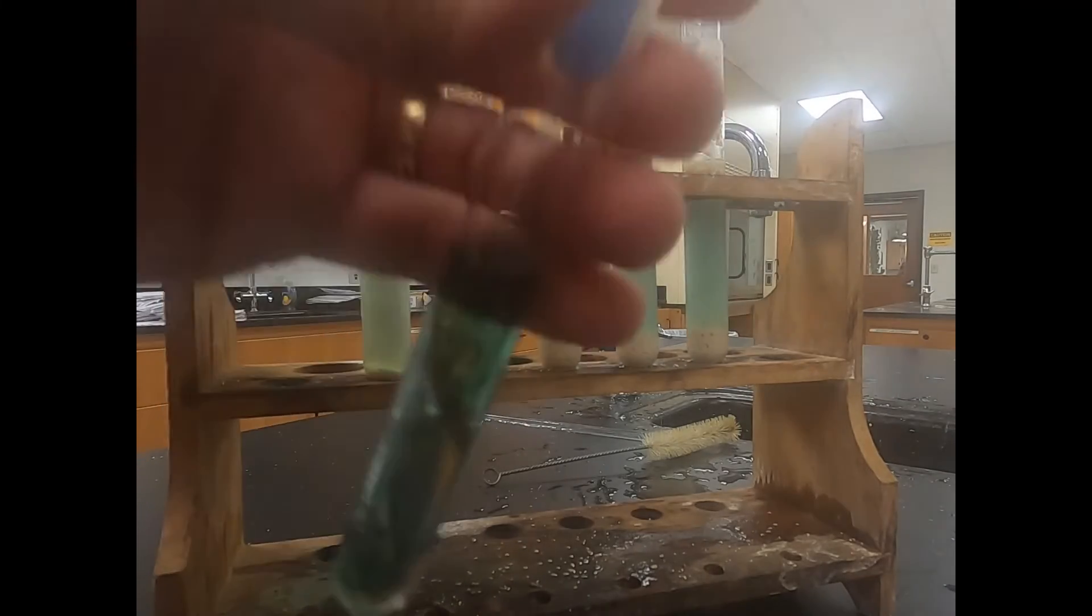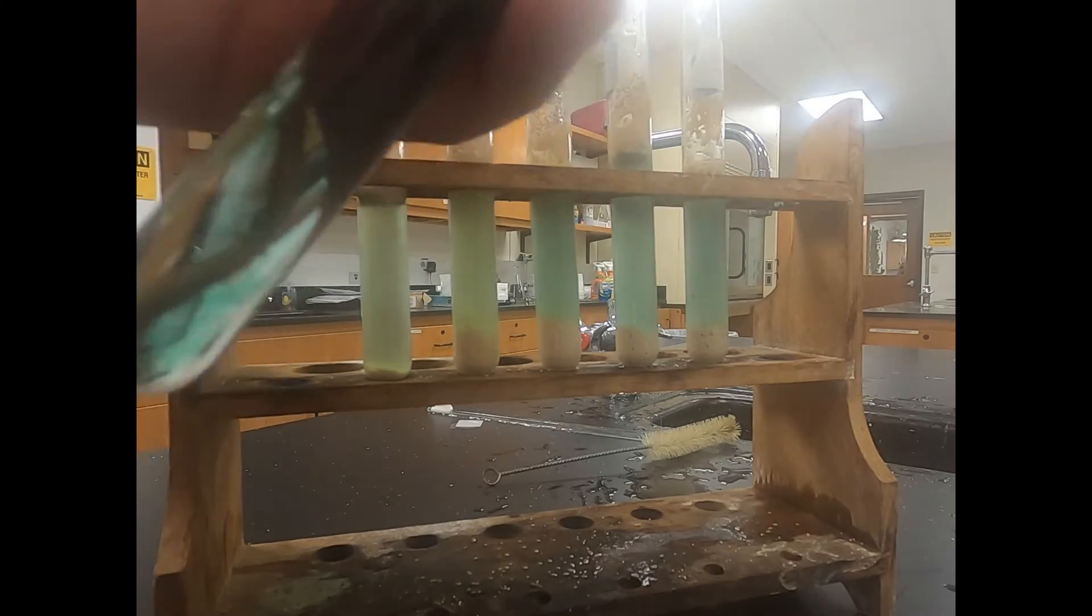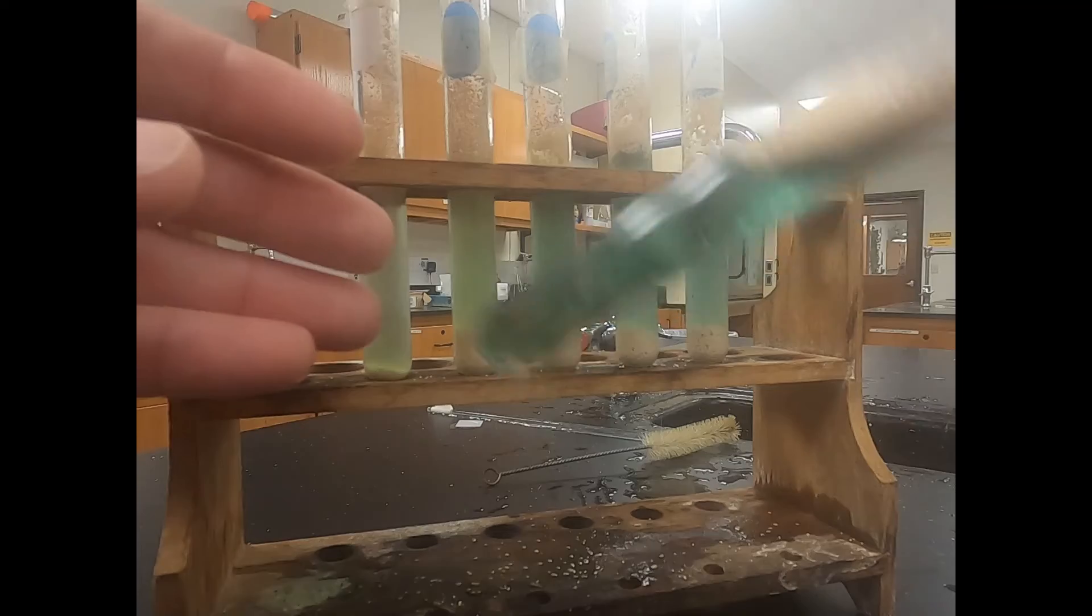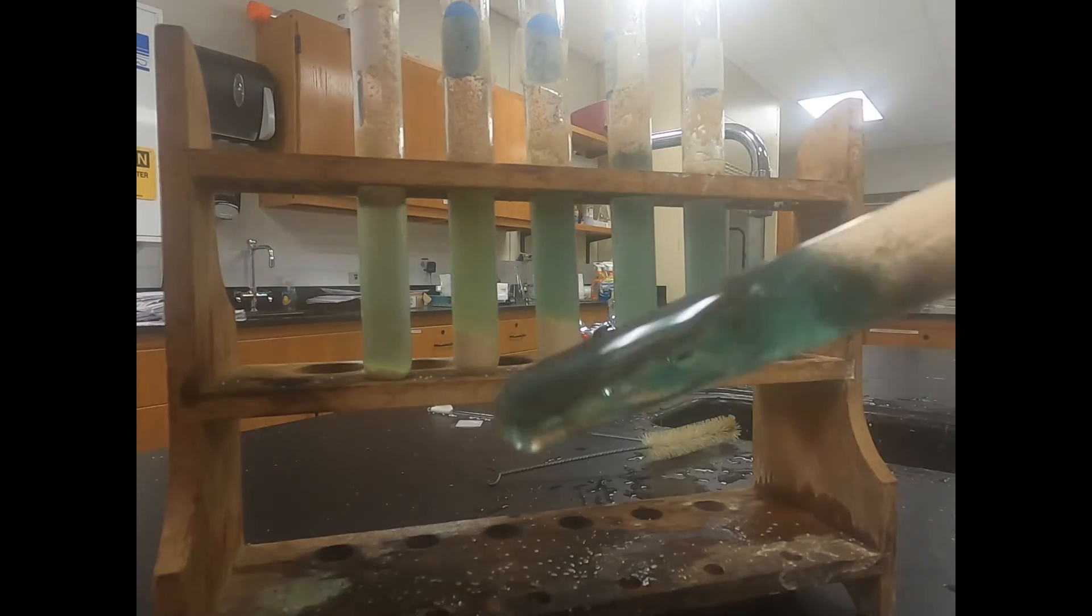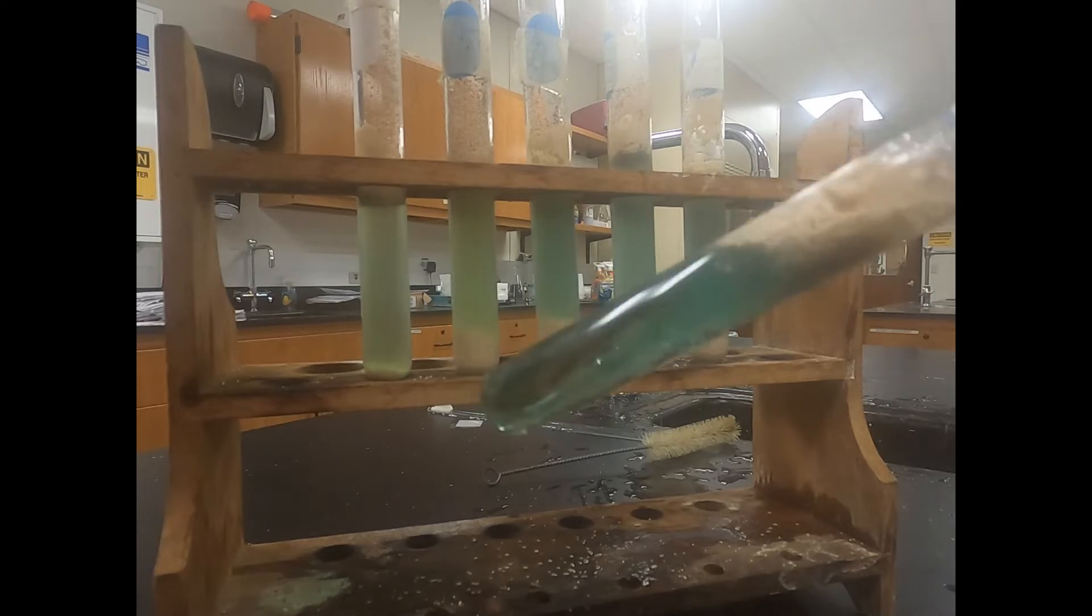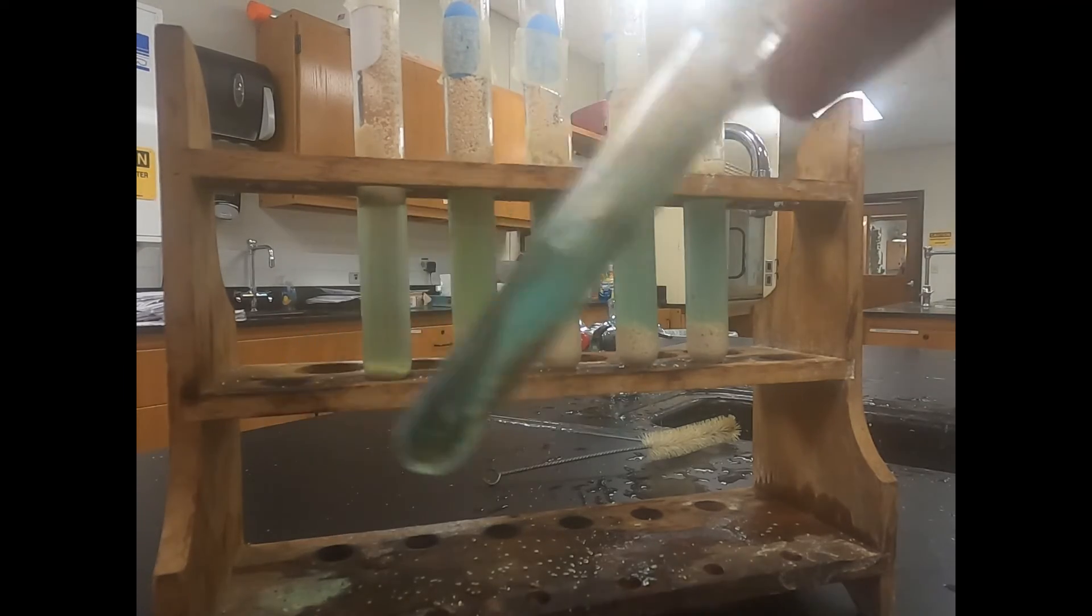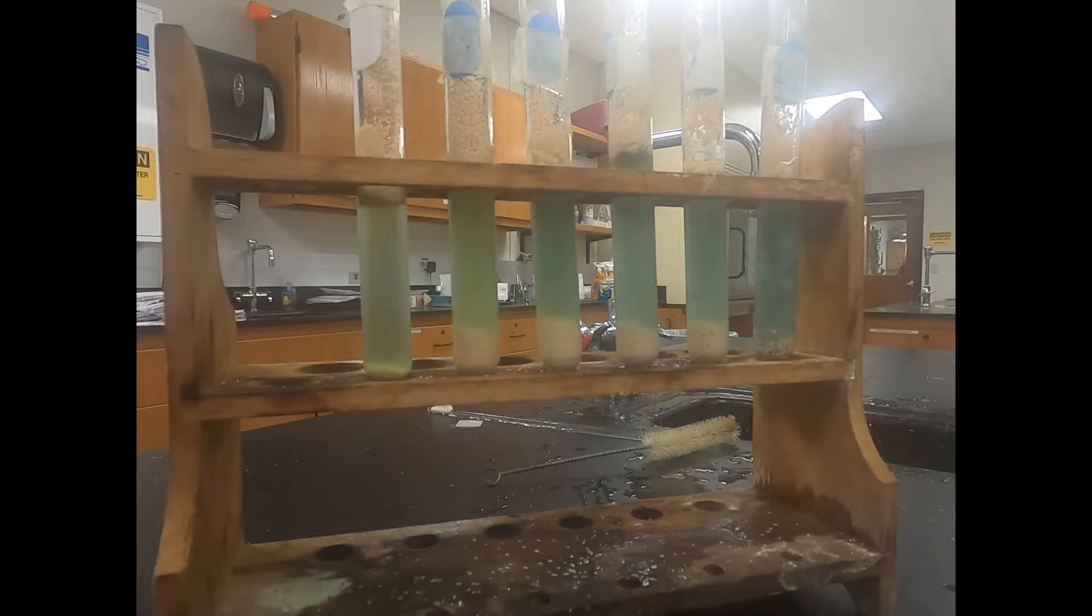Now we're adding yeast to our last test tube and again once we add it we do want to make sure we gently swirl it around. We don't want to be stirring it hardcore or anything but we do want to make it so it doesn't make like a seal on top of our liquid.